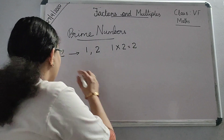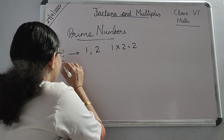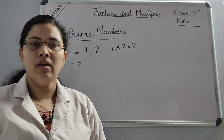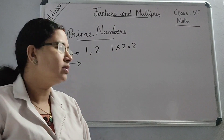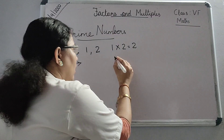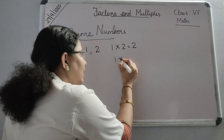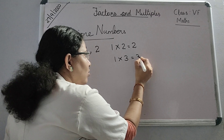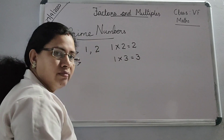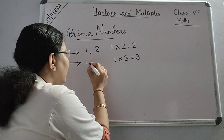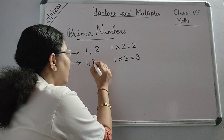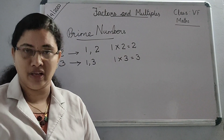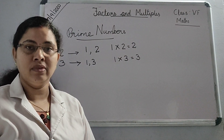The next number I will take is 3. What are the factors of 3? When 1 is multiplied with 3, we will be getting 3. So what are the factors of 3? 1 and 3 are the factors of 3.